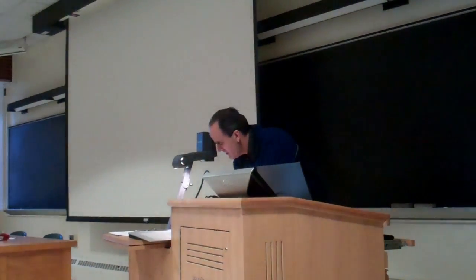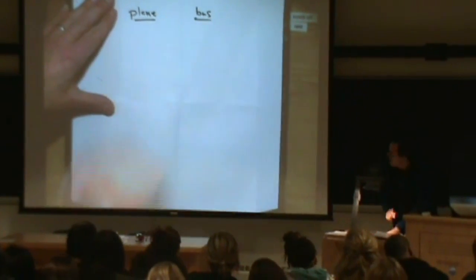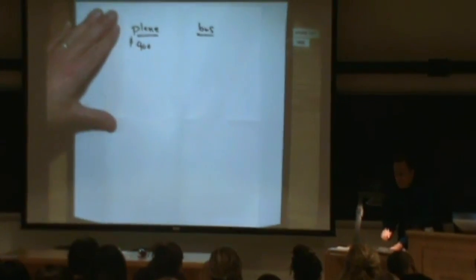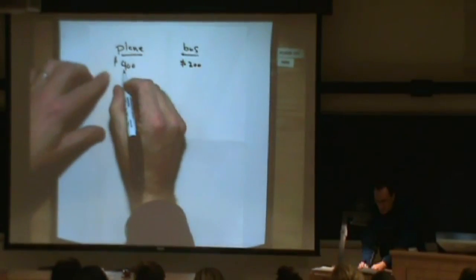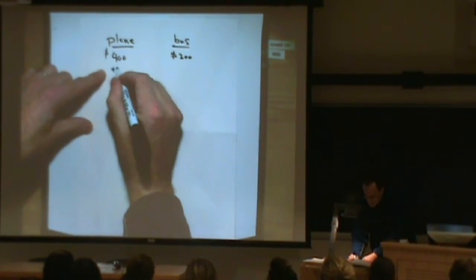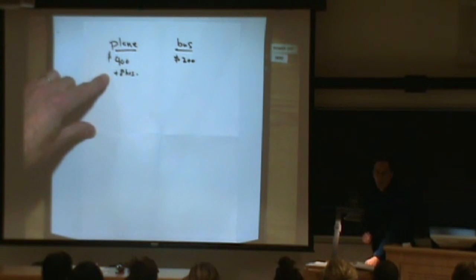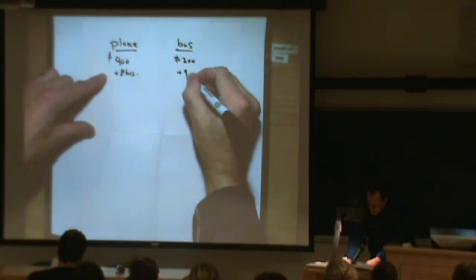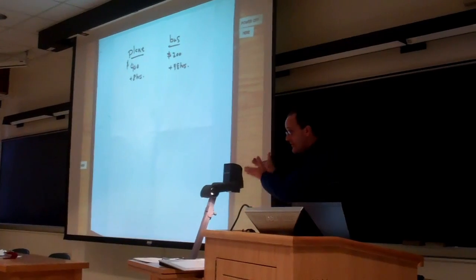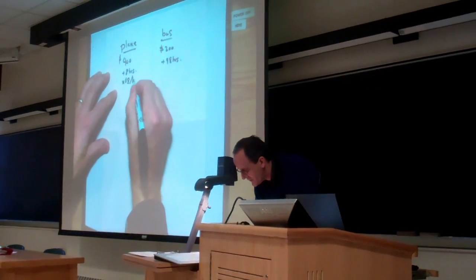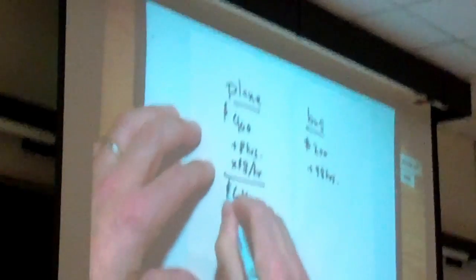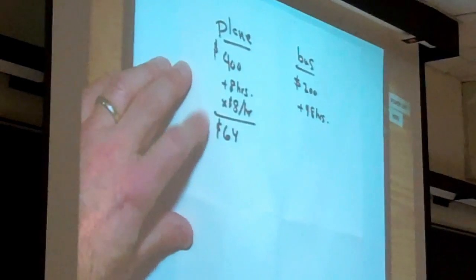Okay, here we go. We've got a plane and a bus. The plane is $400 out of pocket; the bus is $200 out of pocket. There's an extra cost: the plane takes four hours down and four hours back, so we add eight hours of time to the cost of the plane. We multiply eight hours times $8 an hour — eight times eight is $64. That's the time value lost on the plane.